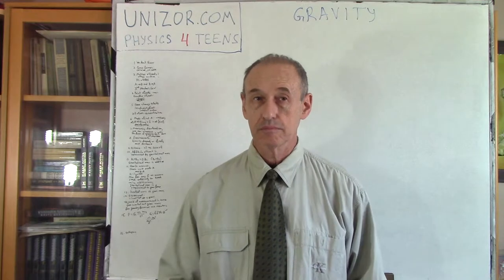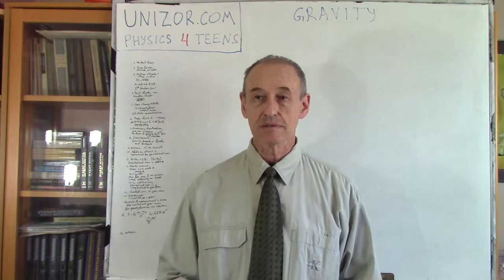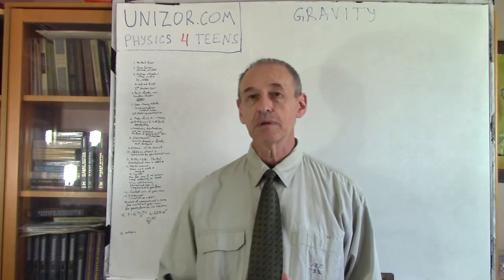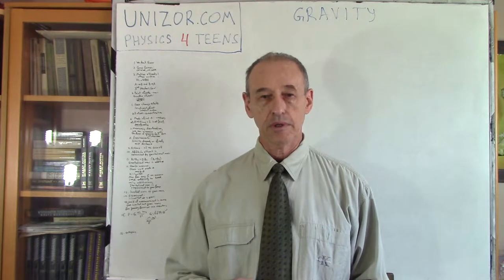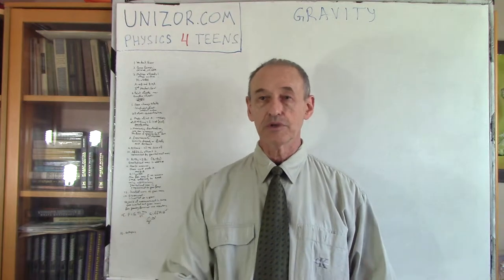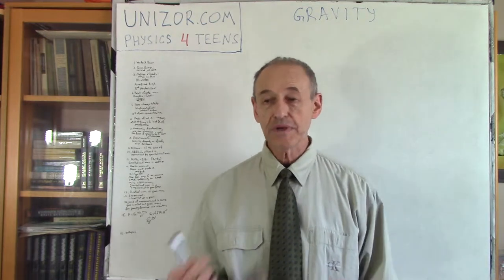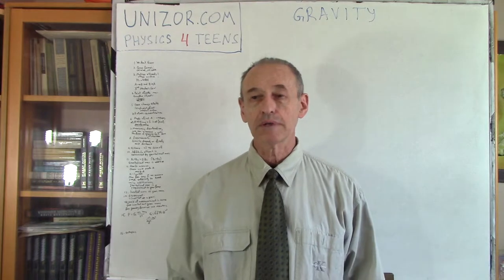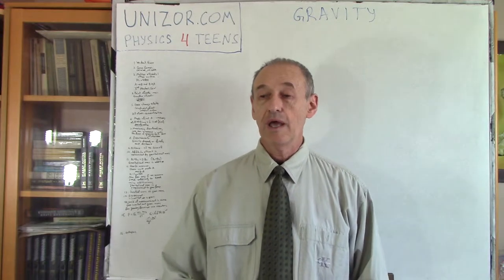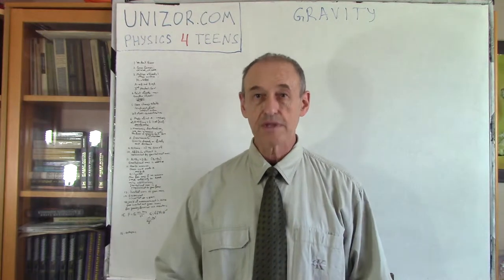However, if you ask any scientist what gravitation is, why it exists, they will have problems actually answering that question. In some way, it's similar to what we know about mathematics. We can prove certain theorems based on more basic qualities, and eventually we go down to the axioms, which we just accept without any proof. In physics there is a similarity — we accept this world as it is, as it is created, or it exists, we don't really know. Our purpose is to learn the properties of this world and properly use them to our advantage.